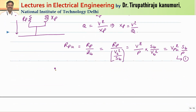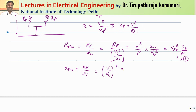Similarly, I can represent x per unit. X per unit equals xp divided by the base impedance. Substituting xp and simplifying, we get the form (V/V_base)² times S_base divided by Q, which becomes V_pu squared divided by Q per unit. This is called the parallel representation of the load.